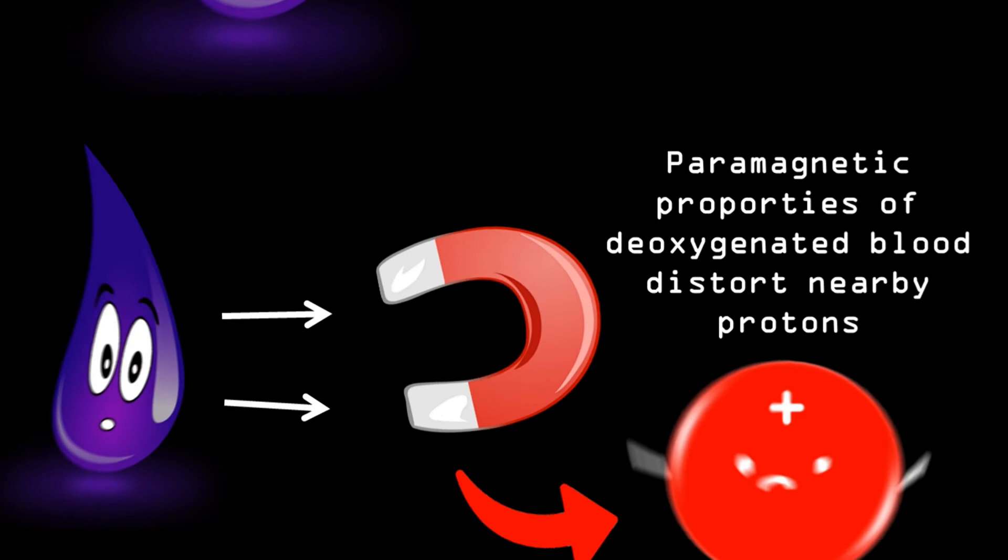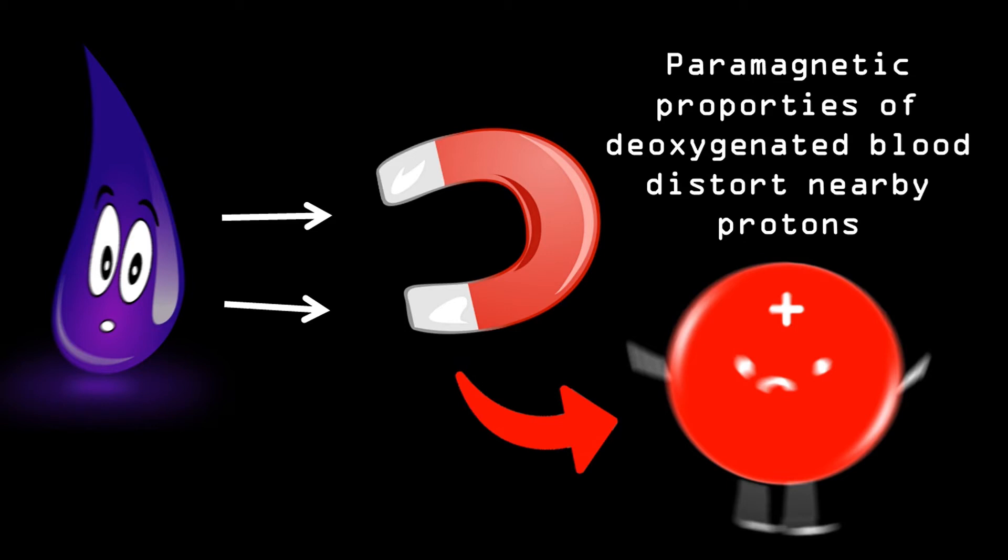Paramagnetic substances distort closed-byte protons, and as such reduce the decay time of the transverse magnetization. Or summarized more simply, whether the blood in your brain is full of oxygen or not will have an effect on how it will react to the magnetic field in the MRI.